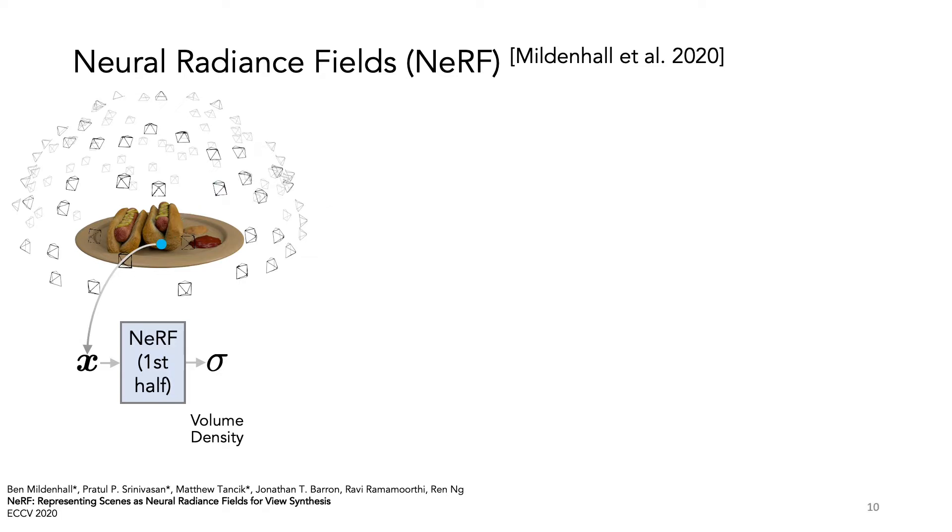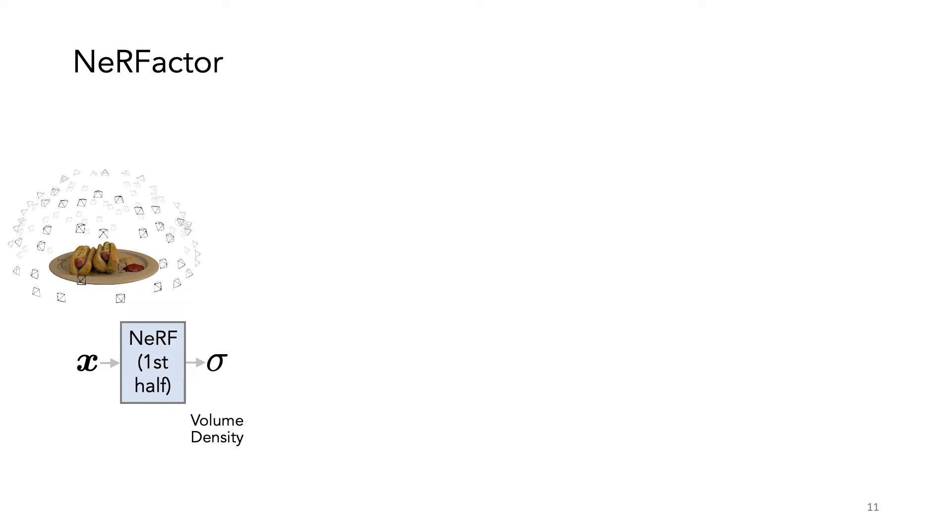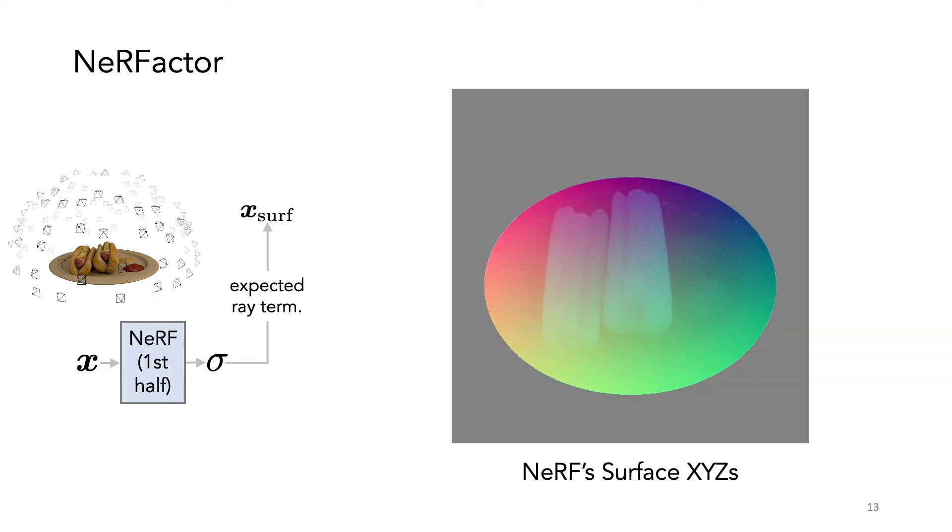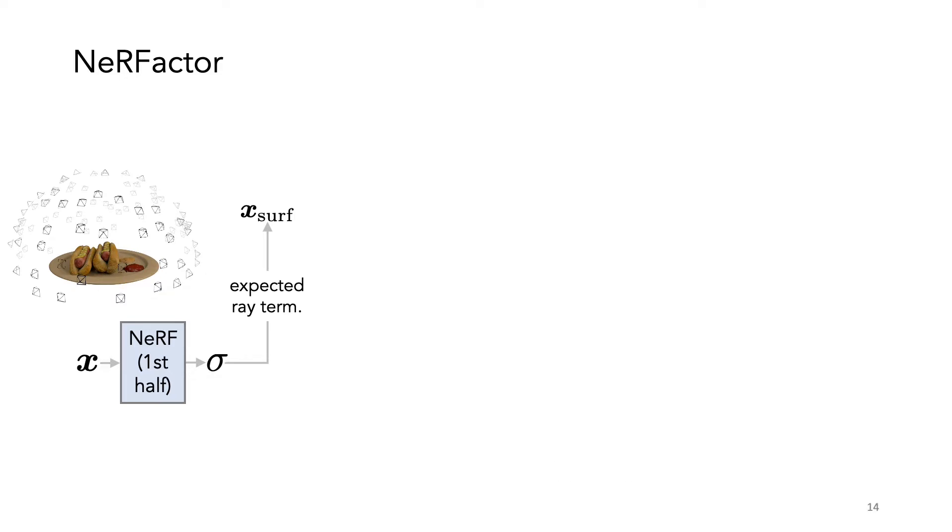So we drop the second half of NeRF and use the first half for shape initialization. From Sigma, we can compute the expected ray terminations at surface points. We can also derive surface normals from Sigma by taking the derivative of Sigma with respect to X.